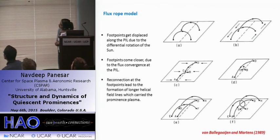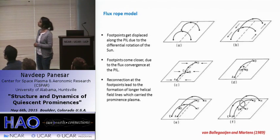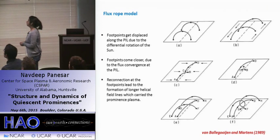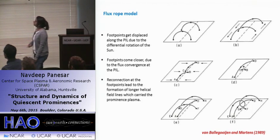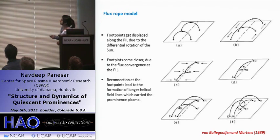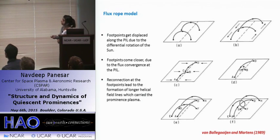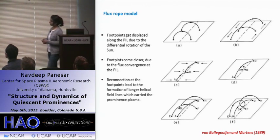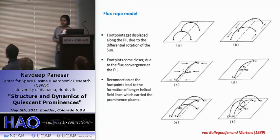Now I will show you the flux-rope model for prominence formation by van Ballegooijen and Martens. In this model, they initially assume a set of field lines that are more or less potential to the polarity inversion line. Due to differential rotation on the Sun, these field lines get displaced along the polarity inversion line in opposite directions, and due to the shear flow, footpoints come closer and reconnect. This results in formation of new loops — a shorter loop BC and a longer loop AD. Similarly, other loops may also reconnect, forming a helical structure that carries plasma high into the corona.